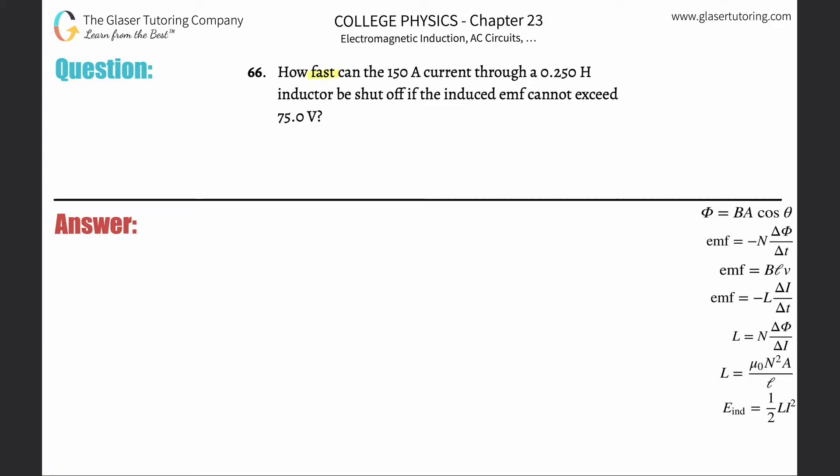Number 66. How fast can the 150 amp current through a 0.25 henry inductor be shut off if the induced emf cannot exceed 75 volts?